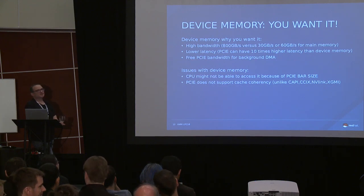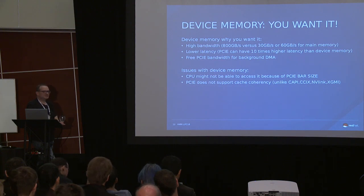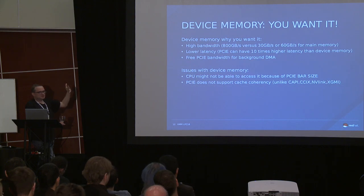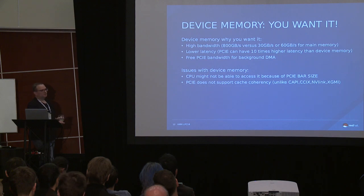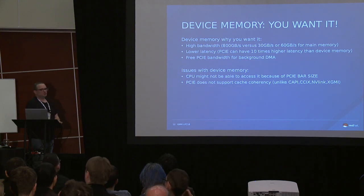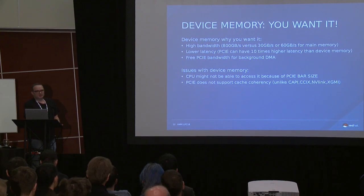That's why you've been seeing things like OpenCAPI from IBM, CCIX, NVLink, XGMI, and other interconnects. All of these are either building on top of PCI Express or defining a new bus with cache coherency, so the CPU can access device memory cache-coherently. CAPI and NVLink are the two things you can buy today, but they're not commodity — they're limited to one platform and not generally available.